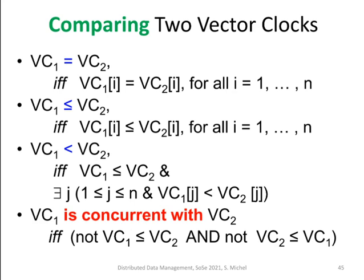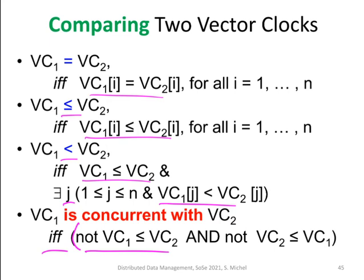Formally: two clocks are identical if equal in all entries. Clock V1 is less than or equal to clock V2 if it is smaller or equal in all entries. V1 is strictly less than V2 if it is less-or-equal everywhere and strictly smaller in at least one entry j. Two vector clocks V1 and V2 are concurrent if and only if neither V1 ≤ V2 nor V2 ≤ V1 holds.